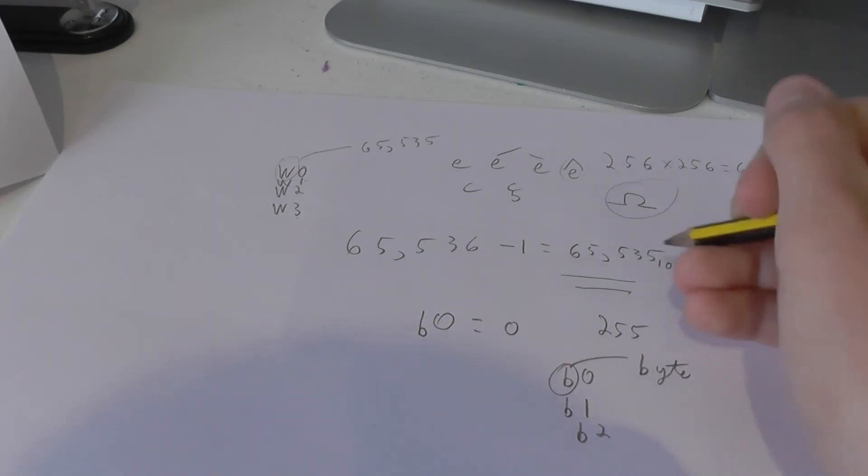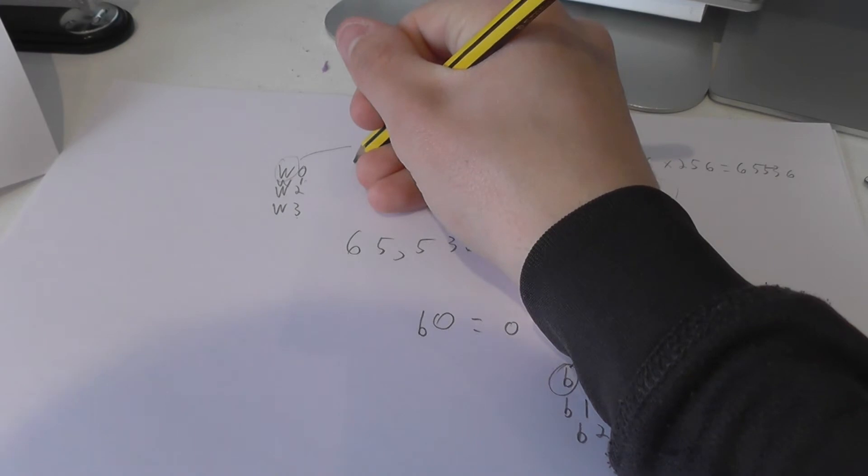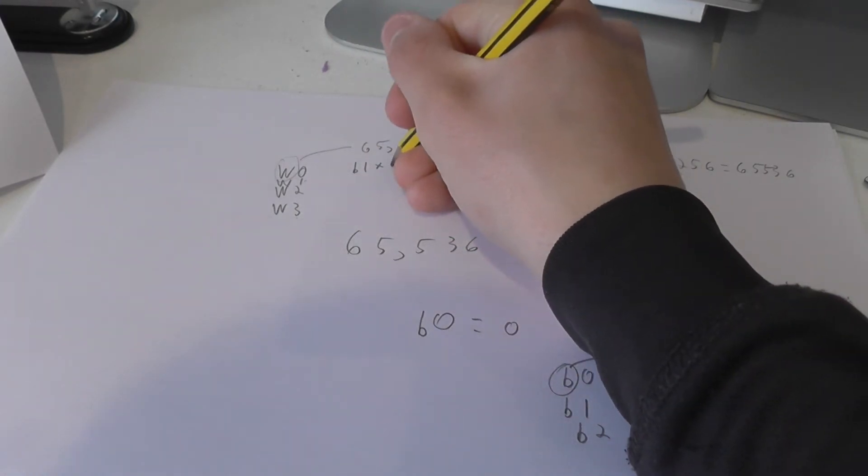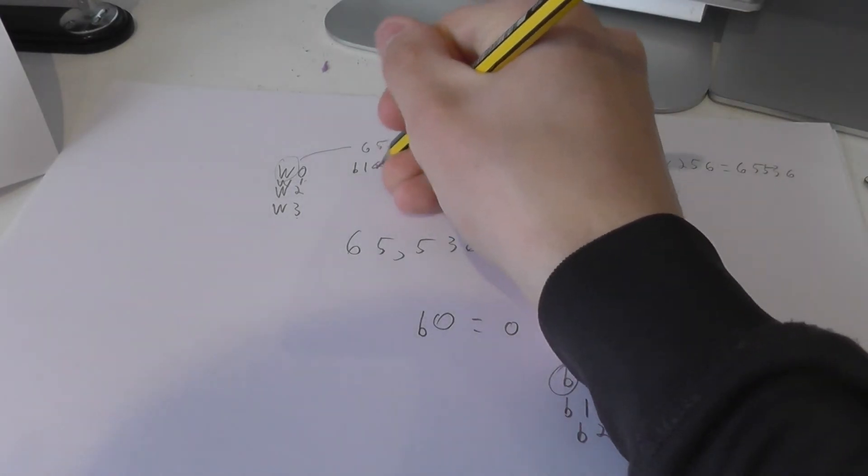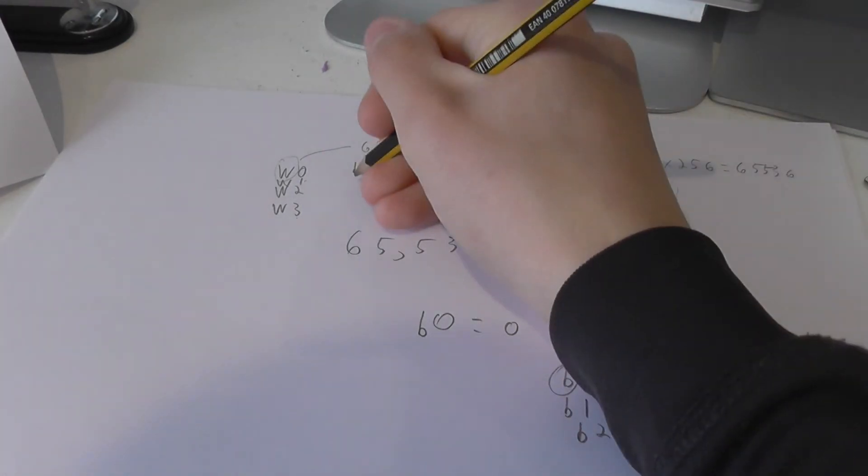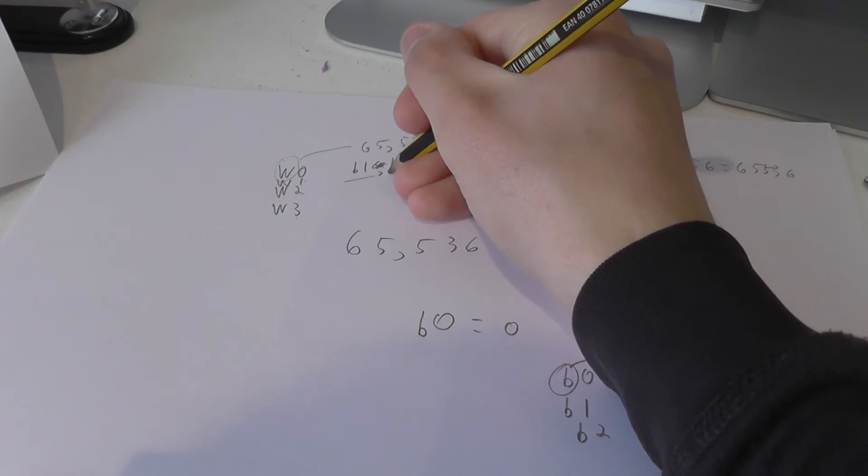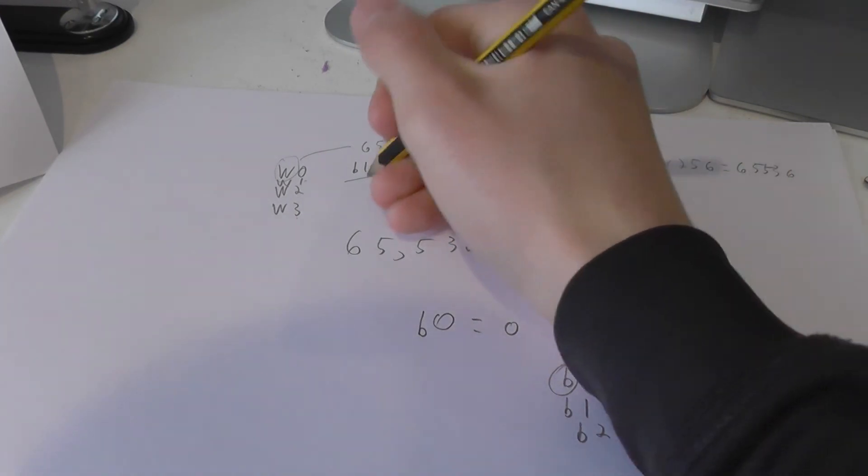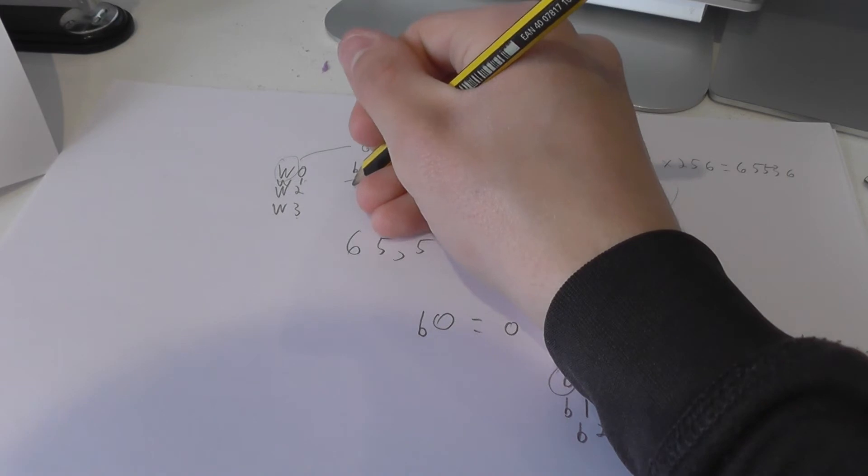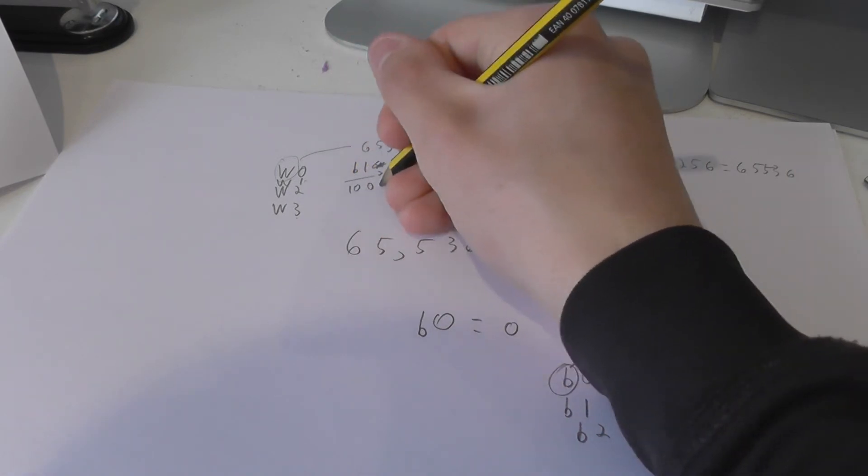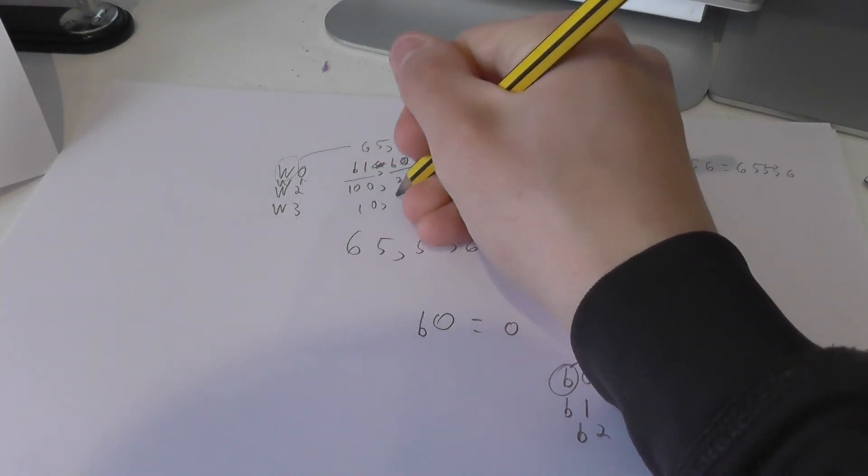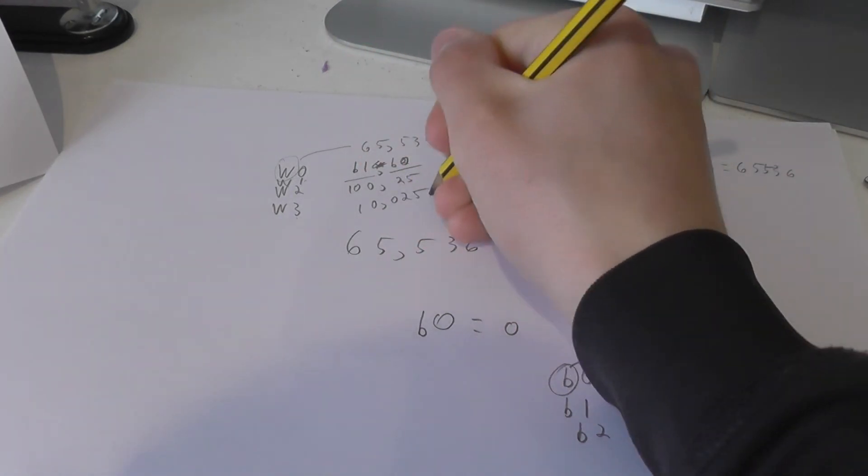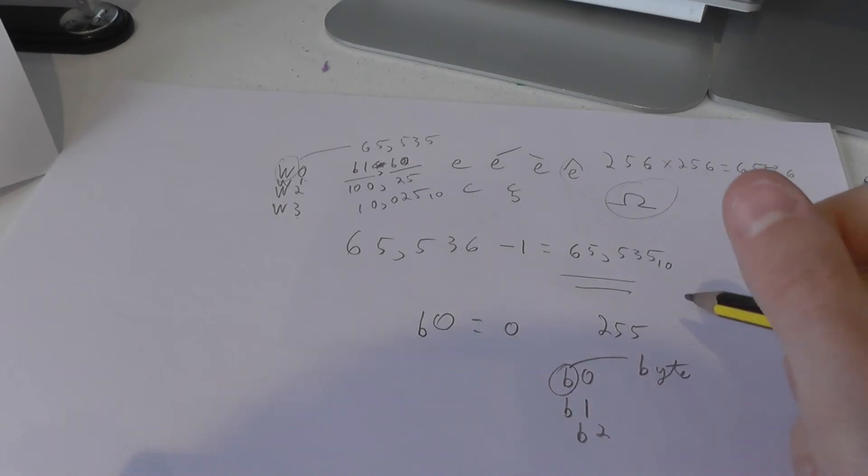So our word variable stores up to the number 65,535. It is made of two bytes. It's made of the variables b1 and b0. We've got all the numbers in b1, then all the numbers in b0. That might be 100, and then that might be 25. So that's 10,025 as the final number.